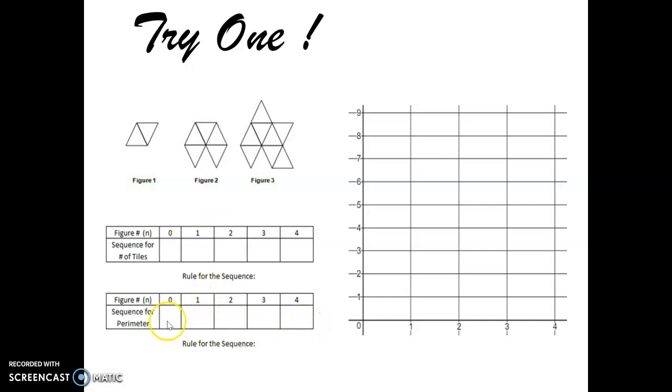Okay. So looking at the perimeter and what values would you get here for figure zero, one, two, three, four. Okay. Now that you have your two table rules, what is your rule? I mean, you should graph it as well, plot the points, check the linear equation for those. So actually, let's start with that. What's the linear equation for the sequence of tiles? Okay. And now what is the linear equation for the sequence for the perimeter?